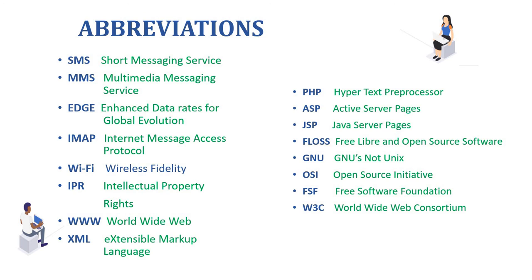IMAP: Internet Message Access Protocol. Wi-Fi: Wireless Fidelity. IPR: Intellectual Property Rights. WWW: World Wide Web. XML: Extensible Markup Language. PHP: Hypertext Preprocessor. ASP: Active Server Pages. JSP: Java Server Pages. FLOSS: Free/Libre and Open Source Software. GNU: GNU's Not Unix. OSI: Open Source Initiative. FSF: Free Software Foundation. W3C: World Wide Web Consortium.